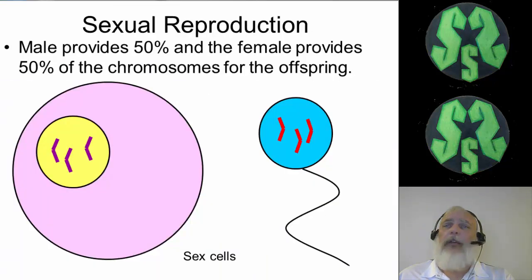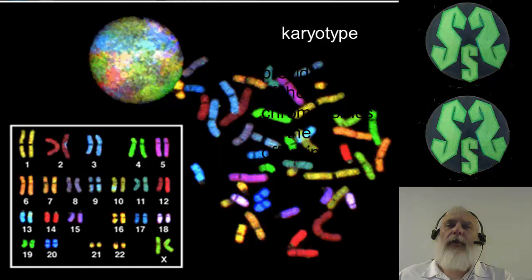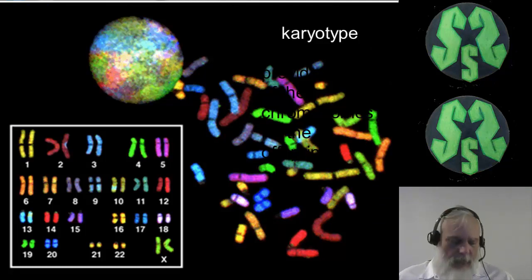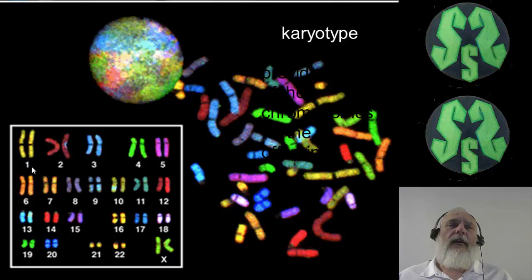A quick flashback: we know about the two sex cells. The male sperm cell provides 50% of the genetic material, the female egg cell provides the other 50% of the chromosomes for the offspring. This is the mapping of all 23 pairs of chromosomes. You can look at this and see pair one, pair two, pair three, et cetera.